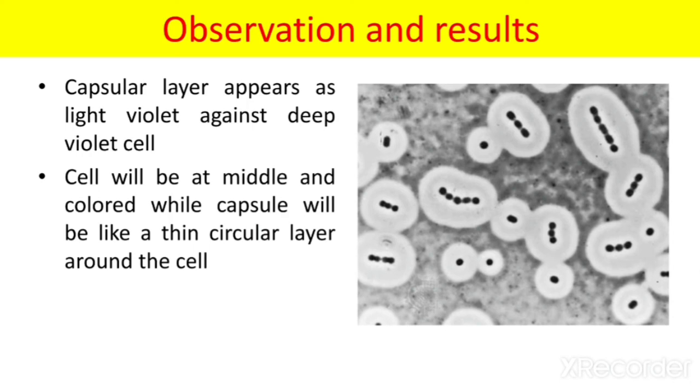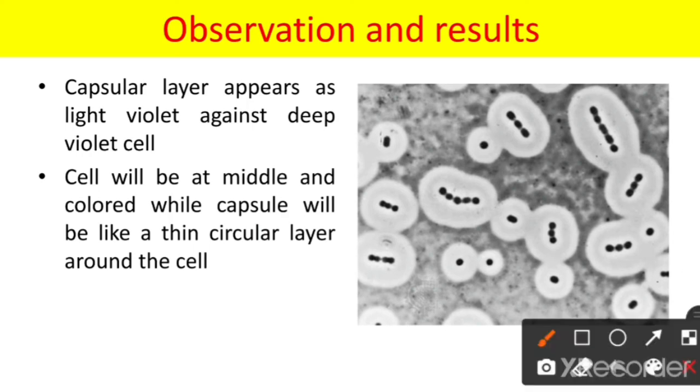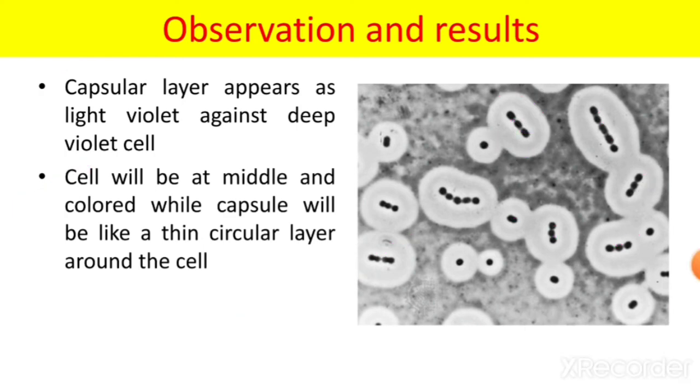Now let's see the observation. In the observation, the capsule layer appears as a light violet against a deep violet cell. Cell will be at middle and colored while capsule will be like a thin circular layer around the cell. Here we can easily observe, this is the black colored bacterial cell. Around the bacterial cell the whitish color is the capsule. So like this we can observe the capsule under 100x. In this slide we can observe plenty of capsule bacterial cells. This is the capsule staining with the help of Hiss method and we can easily observe the capsule.